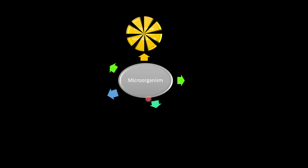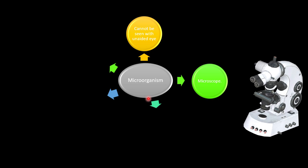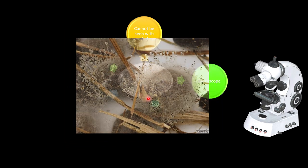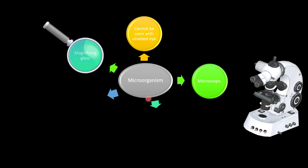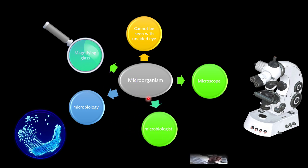Microorganisms are so small that they cannot be seen with the naked eye — a microscope is needed to see them. Some microorganisms such as fungi can be seen with the help of a magnifying glass. The study of microorganisms is called microbiology, and scientists who study microorganisms are called microbiologists.